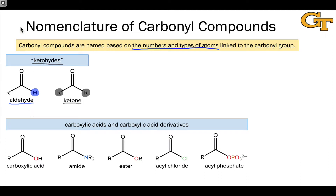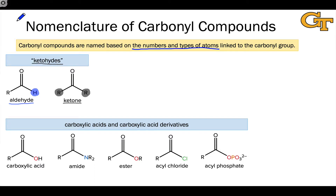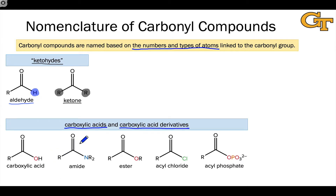When we replace one of those carbon or hydrogen groups with a heteroatom, we end up with what are called the carboxylic acid derivatives, or the parent compounds, which are called carboxylic acids. The carboxylic acid contains a hydroxyl group linked to the carbonyl carbon, and the other carboxylic acid derivatives are at the same oxidation level as the carboxylic acid. We can imagine them as substitution products of the carboxylic acid where the hydroxyl group has been replaced by some other heteroatomic group.